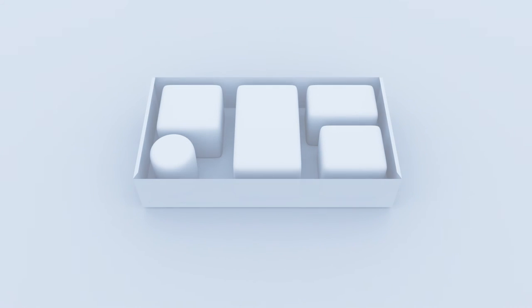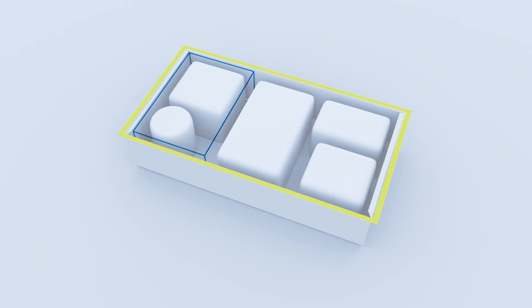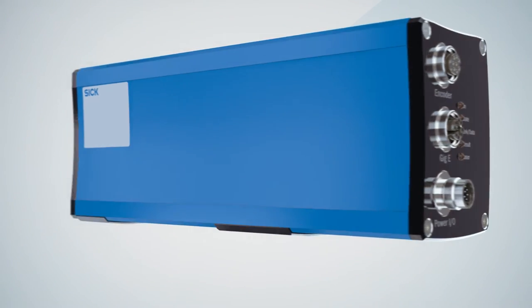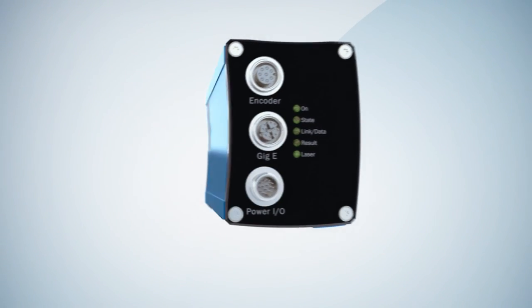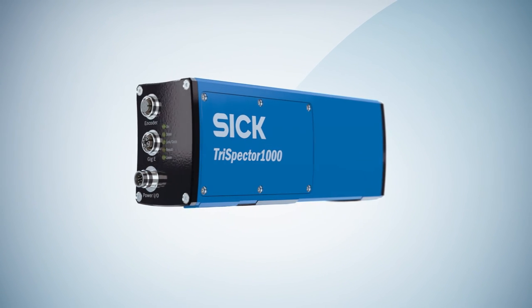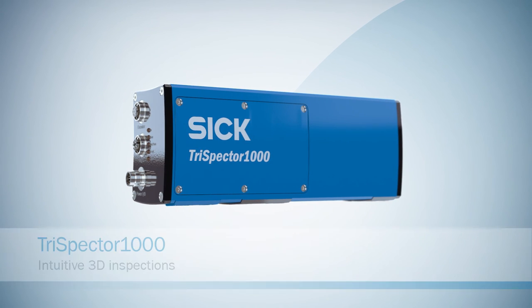Everything while the TriSpector1000 keeps track of movement and repositions the inspections in real time. In short, TriSpector1000 is an easy to use high quality 3D sensor that combined with worldwide first-class service from SICK delivers the reliability you need.